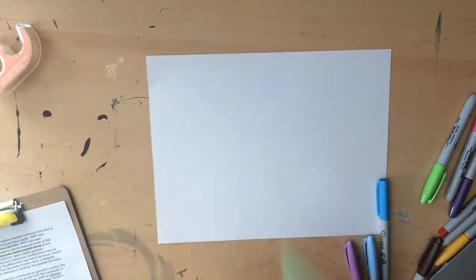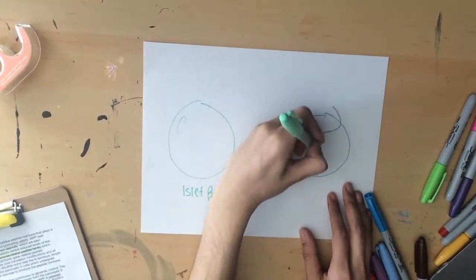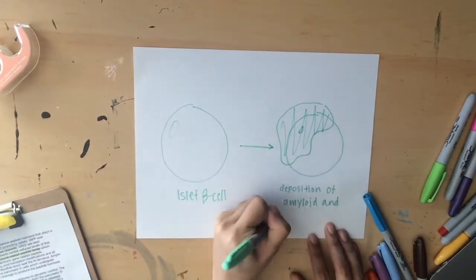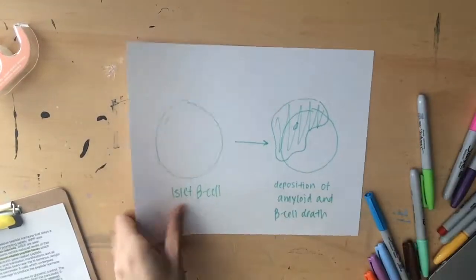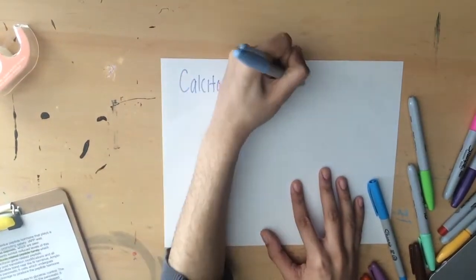IAPP was discovered through its ability to aggregate into islet amyloid deposits, which are seen particularly in association with type 2 diabetes, where patients exhibit reduced levels of this protein in the blood and pancreas. It belongs to the calcitonin-related peptide family,